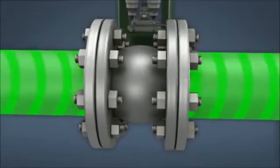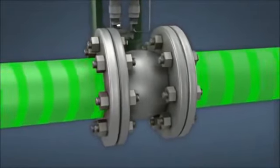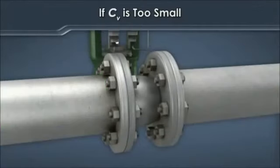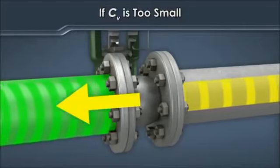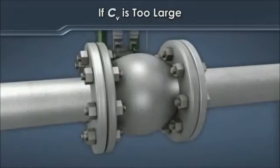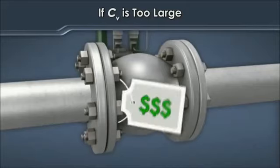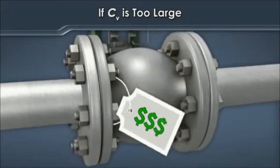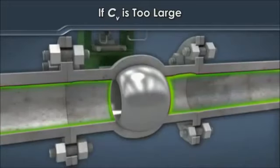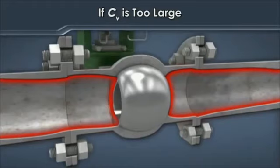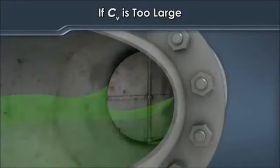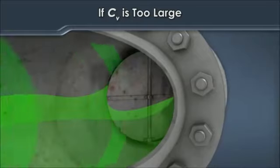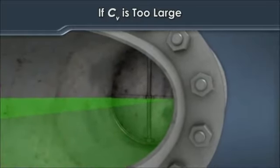It is important to properly match the valve coefficient to a valve's intended use in a system. If the valve coefficient is too small, not enough fluid will pass through the valve, and upstream equipment, such as pumps, can be damaged. If the valve coefficient is too large, the following problems could occur: the valve may be more expensive, larger, or heavier than necessary; the valve or pipes may be damaged as a result of too much flow; or the valve may experience the bathtub stopper effect — this occurs when the valve is near its closed position and is rapidly sucked closed, sending damaging waves through the system.